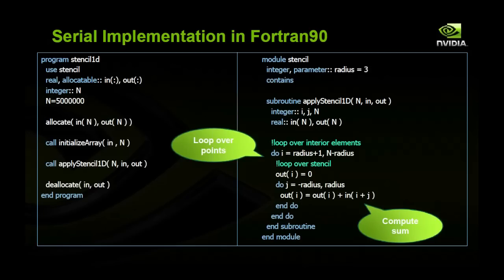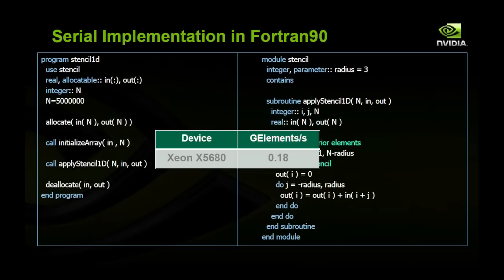Looking at the actual Fortran 90 implementation of apply_stencil_1D, you can see it loops from radius plus 1 to n minus radius. We loop over these bounds because we only want to execute on the interior elements — the exterior elements are the boundary conditions and are handled separately. We initialize the output value at the current index to zero, then move from the minus side of the radius to the plus side, adding input array values into that output index. On the Xeon X5680, we get about 0.18 giga elements per second.